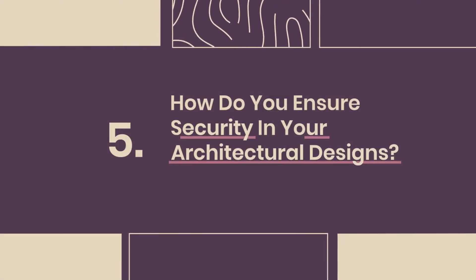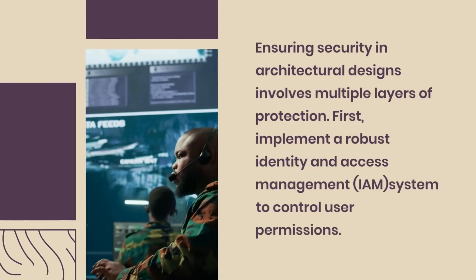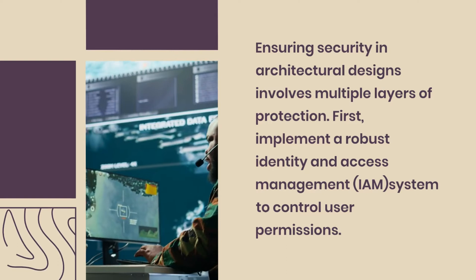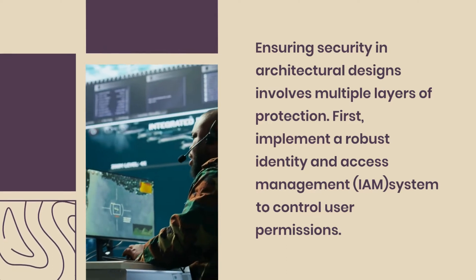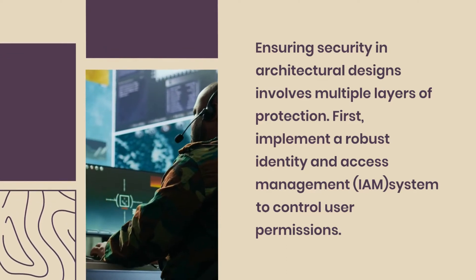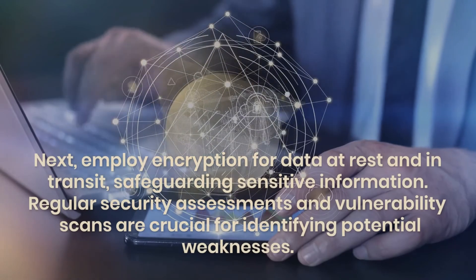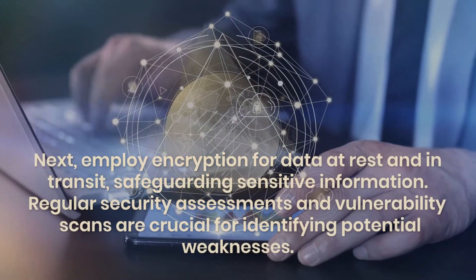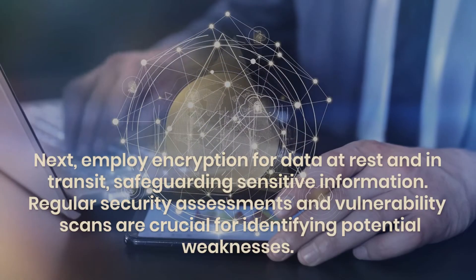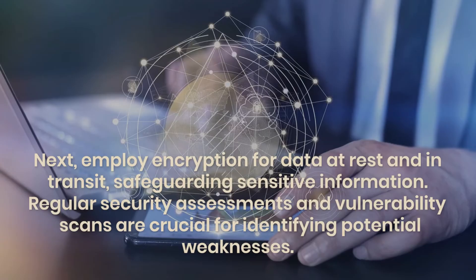Question 5: How do you ensure security in your architectural designs? Ensuring security in architectural designs involves multiple layers of protection. First, implement a robust Identity and Access Management system to control user permissions. Next, employ encryption for data at rest and in transit, safeguarding sensitive information. Regular security assessments and vulnerability scans are crucial for identifying potential weaknesses.